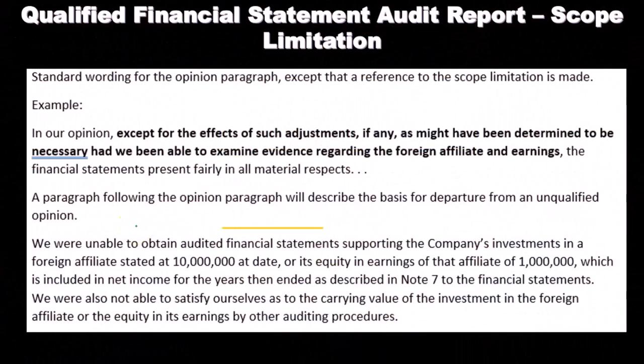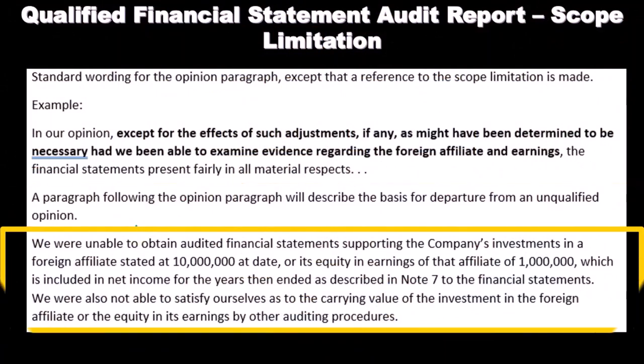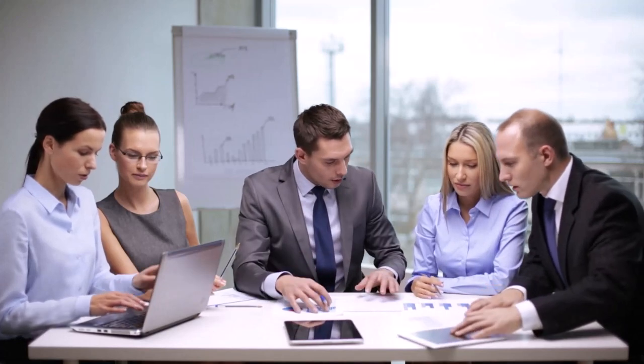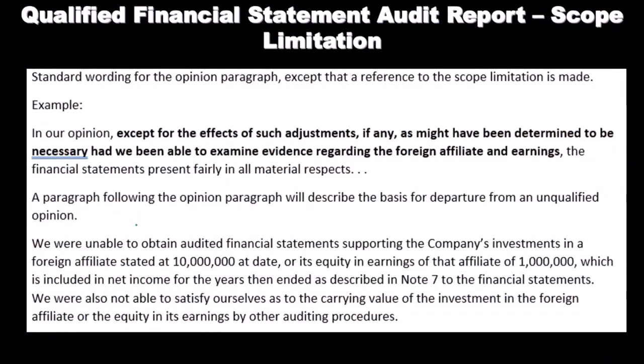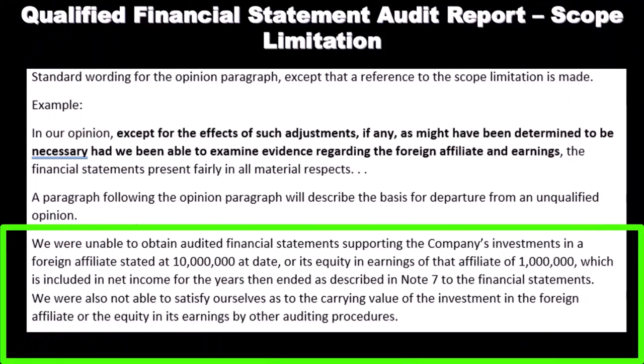A paragraph following the opinion paragraph describes the basis for departure from the unqualified opinion: 'We were unable to obtain an audited financial statement supporting the company's investments in foreign affiliates stated at $10 million at the date, or its equity in earnings of that affiliate of $1 million, which is included in net income for the year then ended, as described in Note 7 to the financial statements. We were also not able to satisfy ourselves as to the carrying value of the investments in the foreign affiliate or the equity in its earnings by other auditing procedures.'